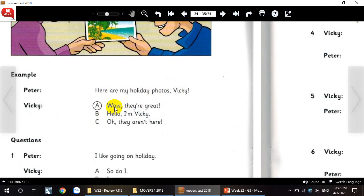Now A: Wow, they're great. B: Hello, I'm Vicky. C: Oh, they aren't here. Why we choose A? Because for the answer B, Hello, I'm Vicky. When they want to show something, here are my holiday photos, Vicky. Peter wants to show his holiday photos. We don't say, Hello, I'm Vicky. Not correct answer. And how about C? Oh, they aren't here. They don't ask someone else. Just want to show something. And now, the best answer is A. Wow, they're great. That's why the correct answer is A.